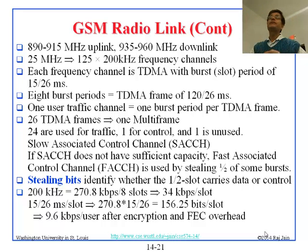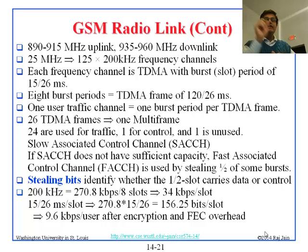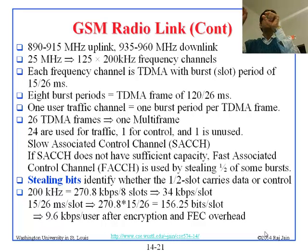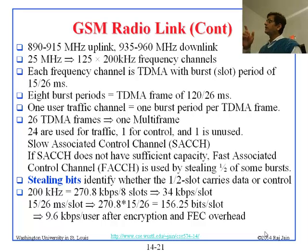Remember the FDMA part — we have 125 frequency channels, and now we are going to take each of those 200 kilohertz channels and put time slots in there. Each frequency channel is TDMA with a slot period of 15.26 milliseconds. Eight burst periods make a TDMA frame of 120/26 milliseconds.